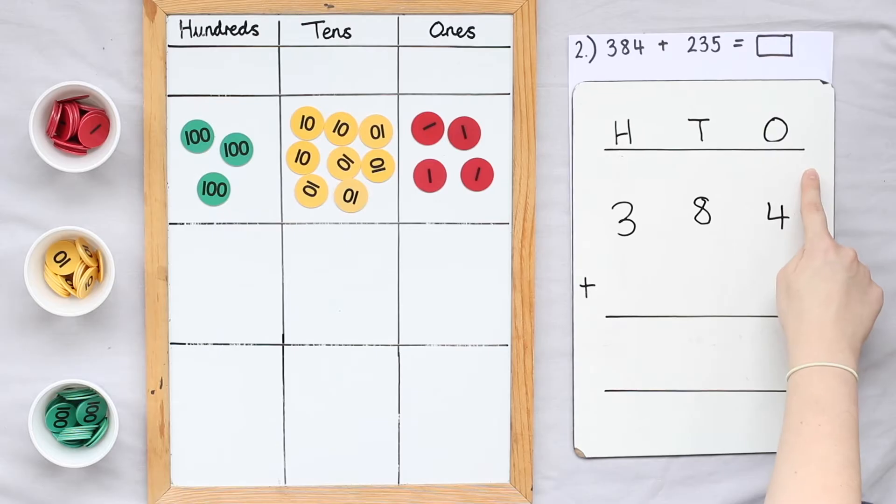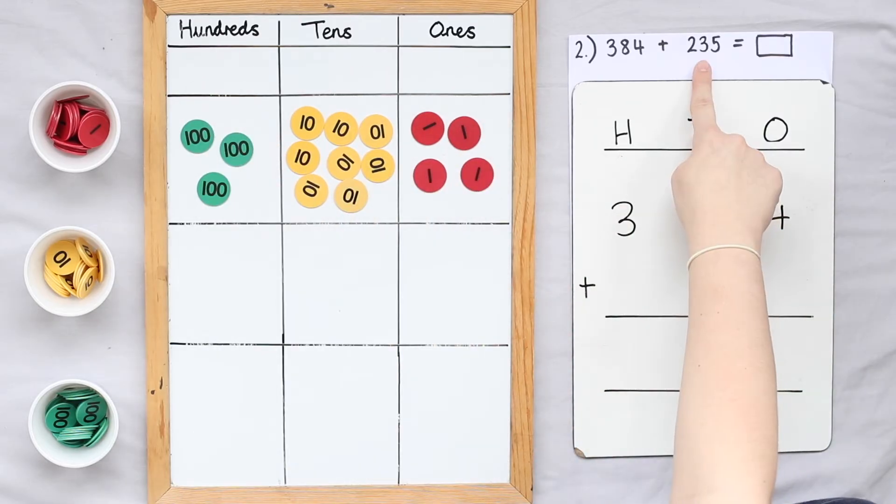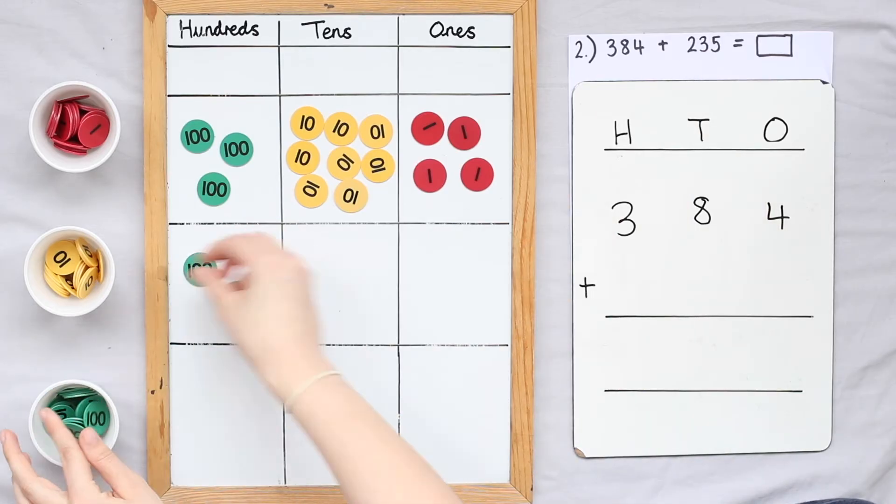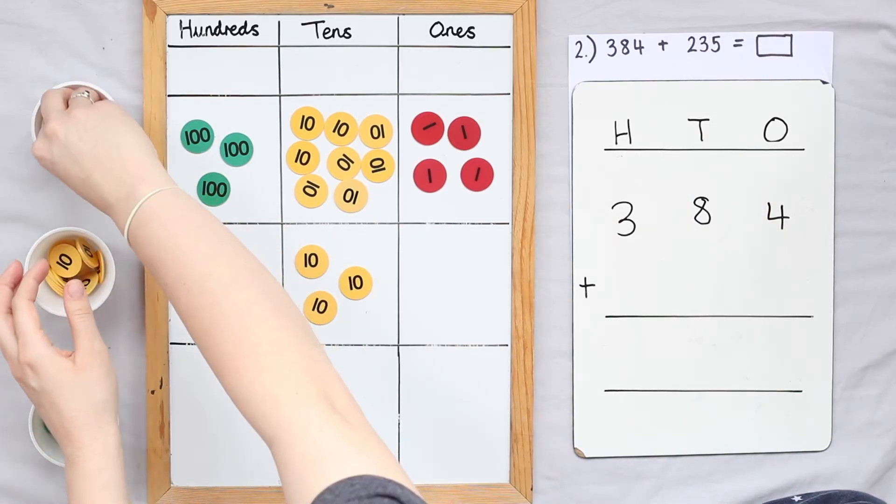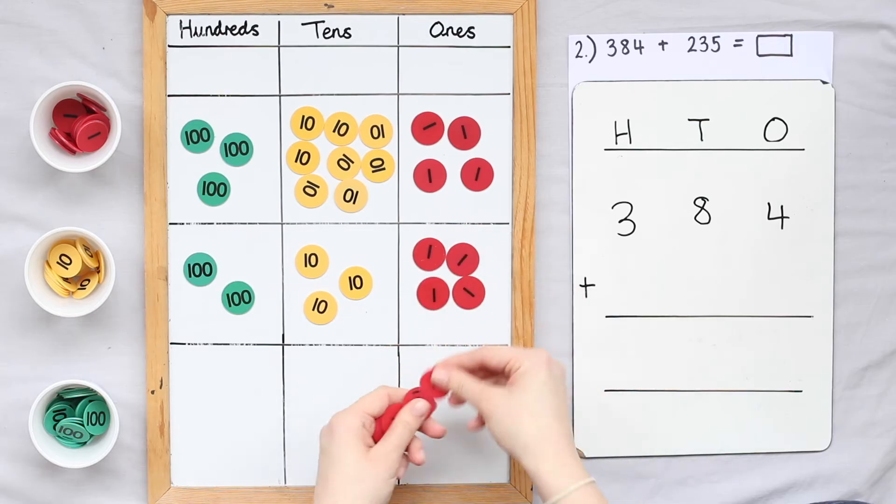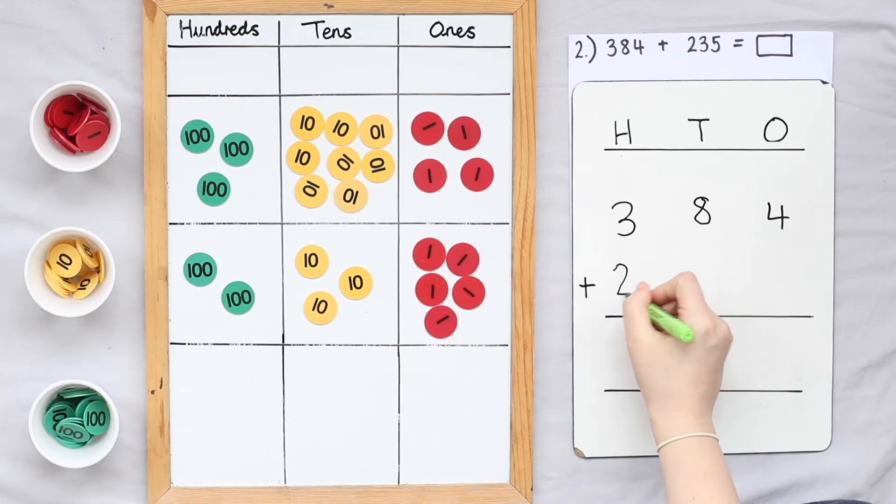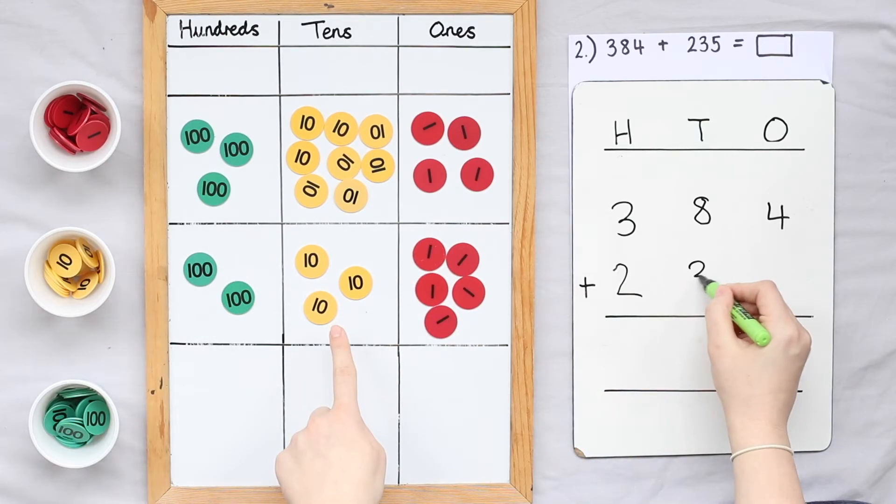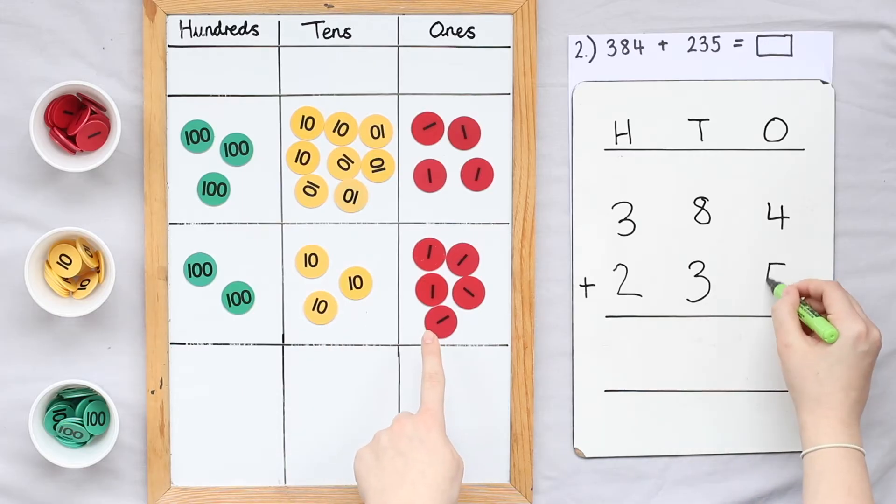Notice how I've left space above my first addend. Next we're going to partition our second addend into hundreds, tens and ones. That's two hundreds, three tens and five ones. I'm going to write my second addend underneath my first addend, ensuring the hundreds, tens and ones are aligned.